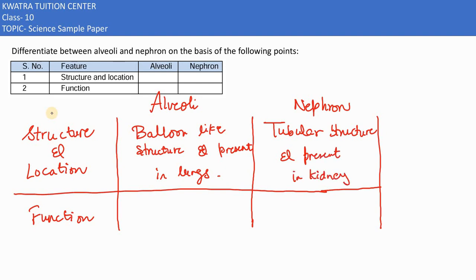Because we know this is for the purpose of filtration. What do you write in kidney? Then comes the function. It helps in exchanging gases. Exchange of gases is there in alveoli, and then in nephron we would be having filtration of blood.